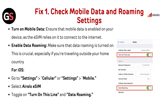Fix 1: Check Mobile Data and Roaming Settings. Turn on Mobile Data — ensure that mobile data is enabled on your device, as the eSIM relies on it to connect to the internet. Enable Data Roaming — make sure that data roaming is turned on. This is crucial, especially if you are traveling outside your home country.